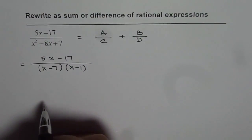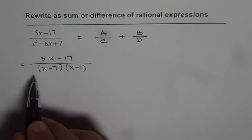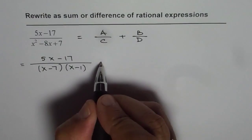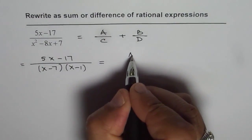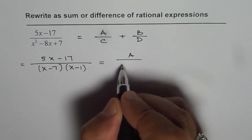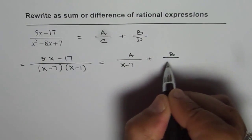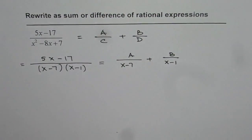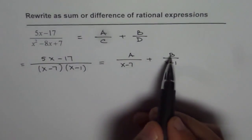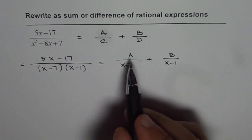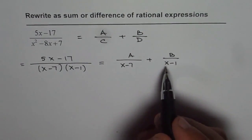Now as you can see, we can write this expression as equal to a over x minus 7 plus b over x minus 1. Now the whole question is to find a and b. So we have already found the two denominators. Now how to find a and b? Well, let's cross multiply.